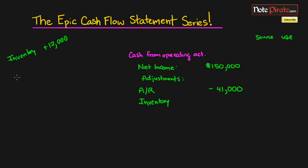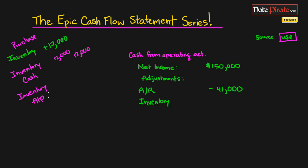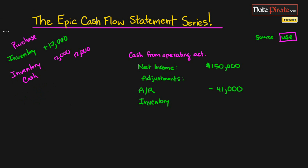Inventory increased by $12,000. Going by our rule of thumb — is it a source or a use? It's increasing, and any current assets that increase are going to be a use of cash. If inventory goes up, that's normally because we've created a journal entry debiting inventory and crediting cash for the purchase of inventory for $12,000. You can see why that would be a use of cash.